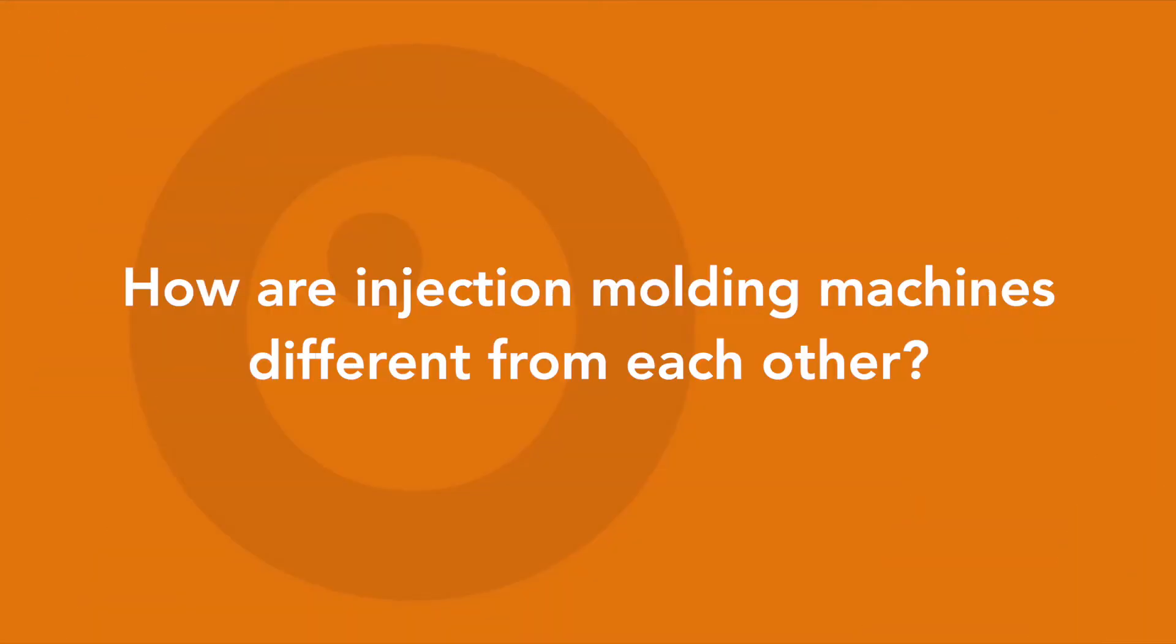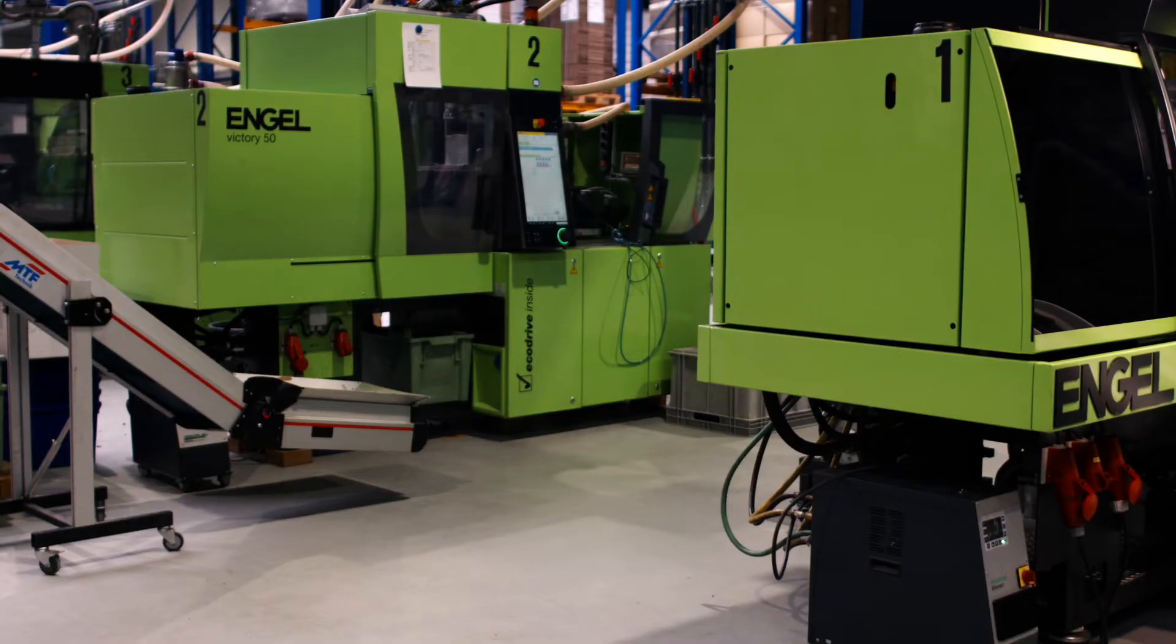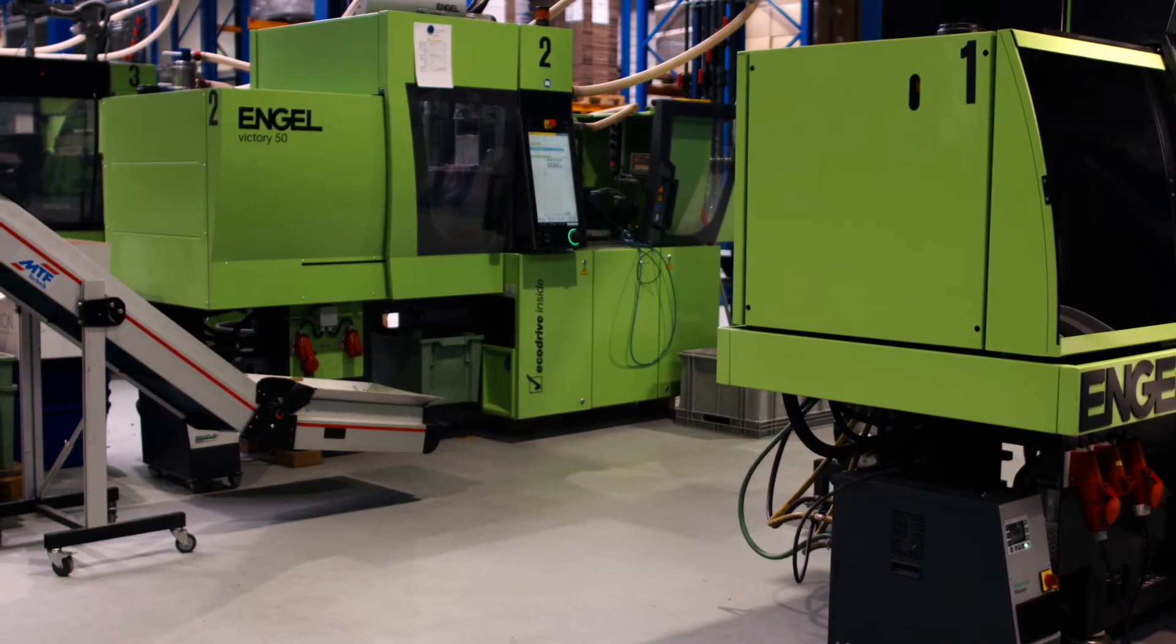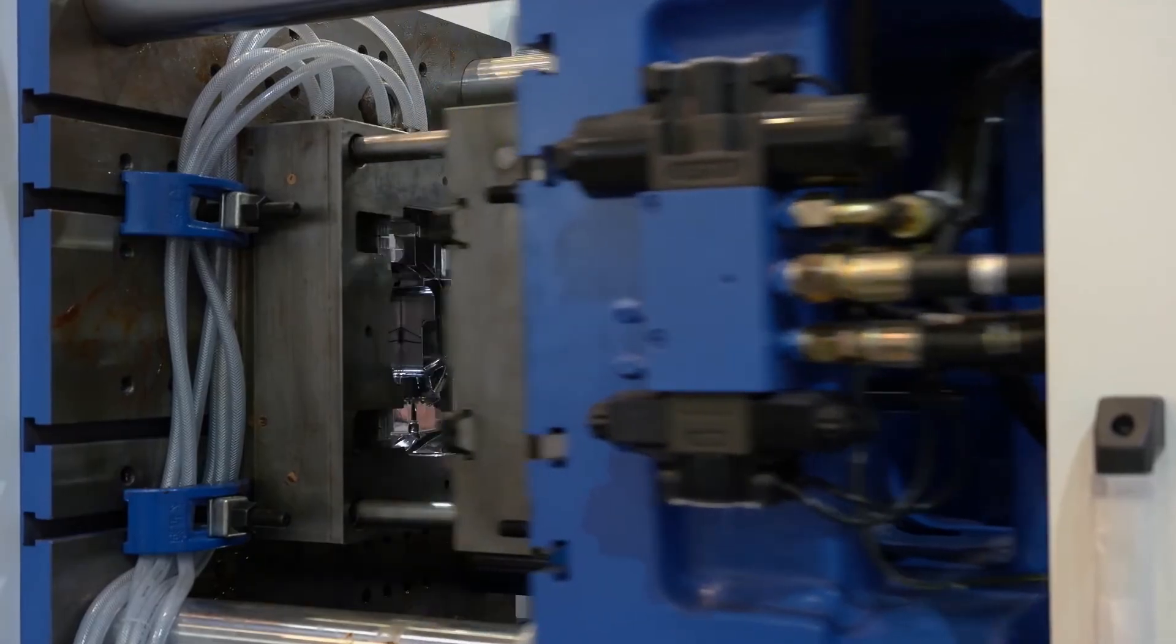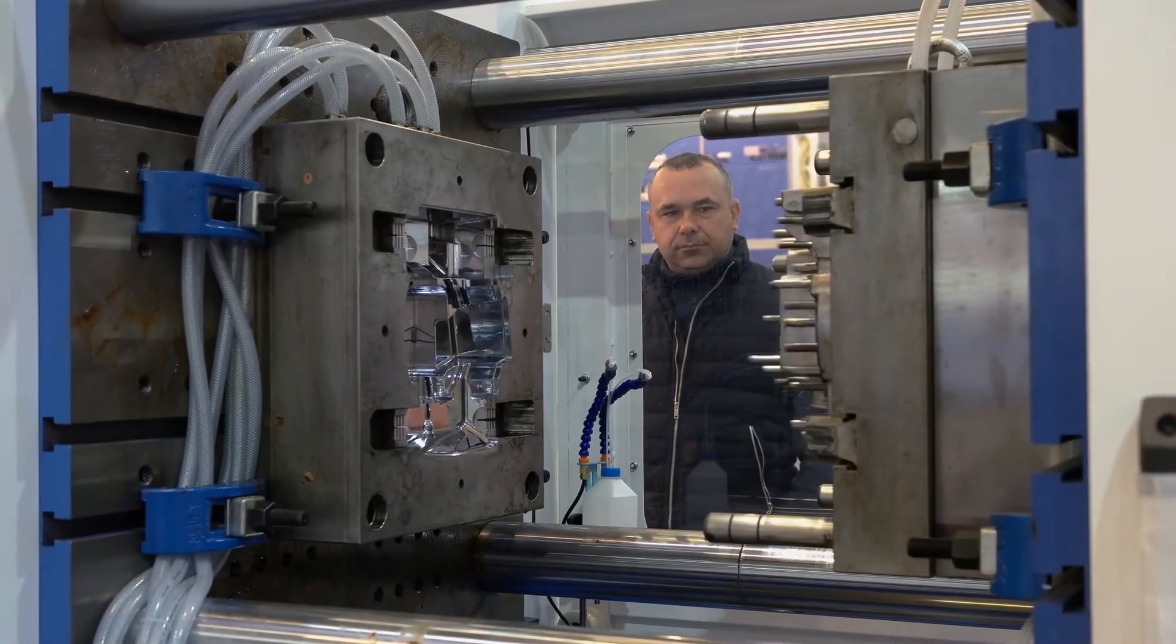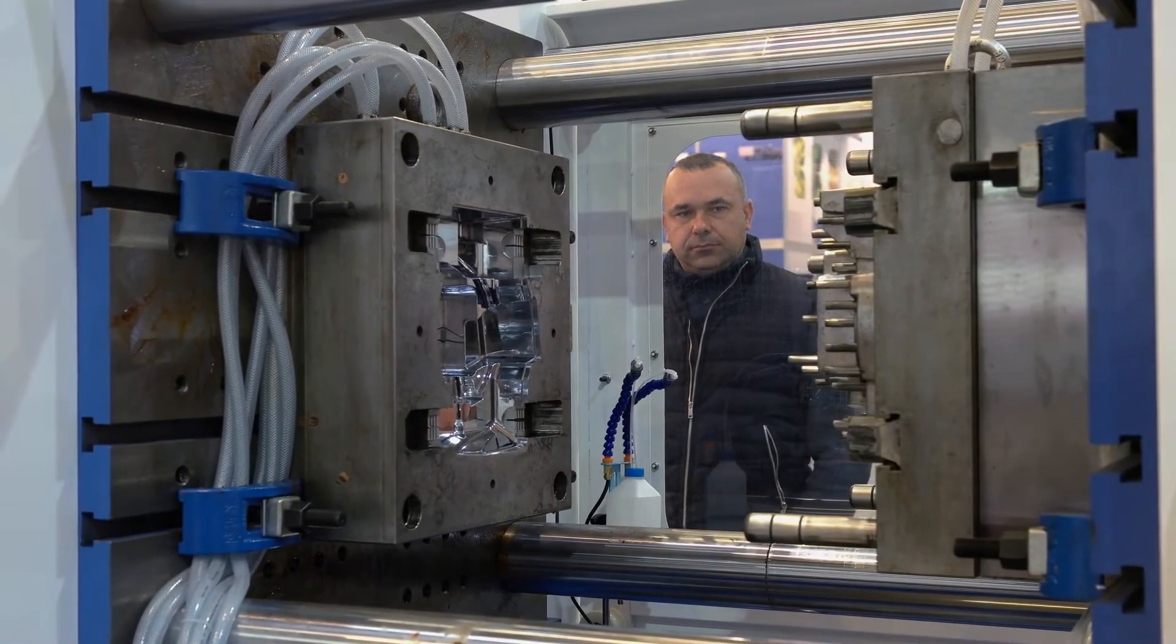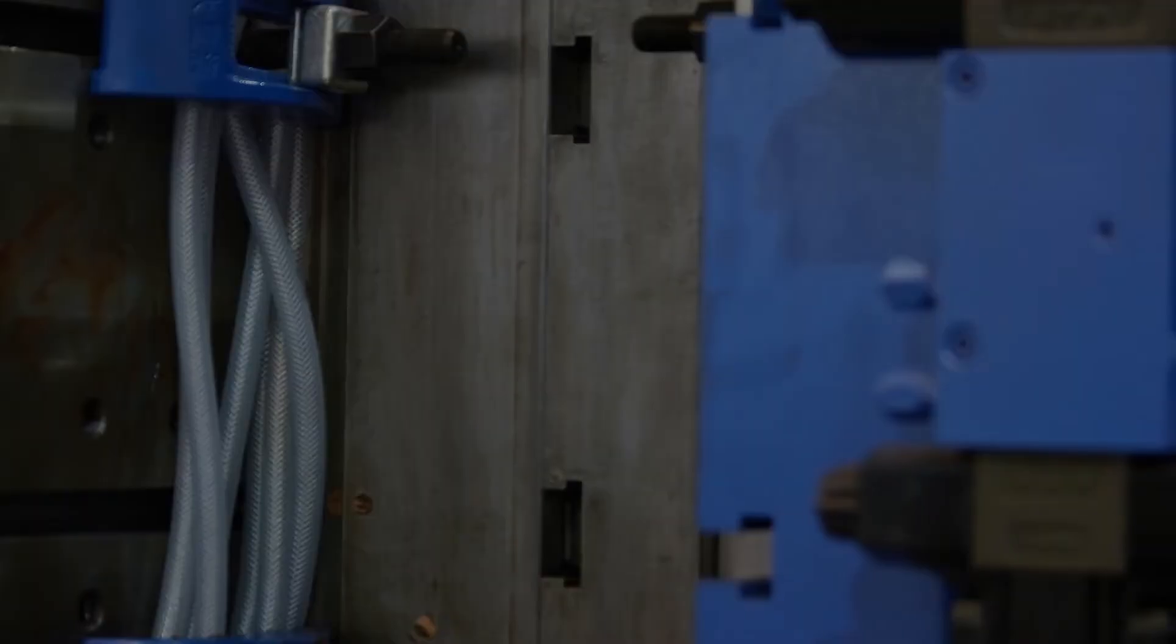How are injection molding machines different from each other? The major difference between injection molding machines is the amount of clamping pressure. This force keeps the mold closed during the injection molding process. Pressure can range from 5 tons of clamping pressure to over 3000.